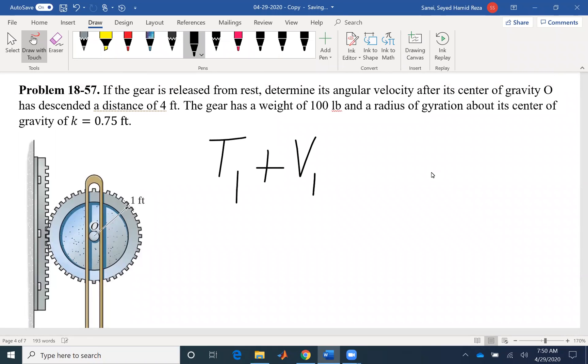Conservation of energy tells us T1 plus V1 equals T2 plus V2. The initial kinetic energy plus the initial potential energy equals the final kinetic energy and the final potential energy.